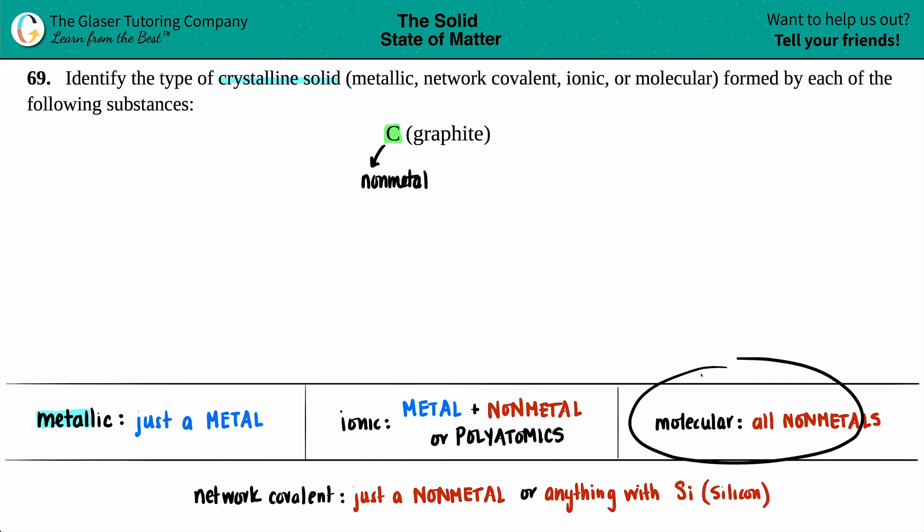Is it a molecular crystalline solid? Molecular crystalline solid comes from molecules, and molecules come from covalent compounds. We're dealing with just non-metals, which I have here, so it could be a molecular crystalline solid. But let's just see if it fits the network covalent crystalline solid.